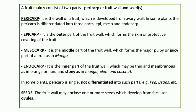In some plants, the pericarp is differentiated into three parts: epicarp, mesocarp and endocarp. Epicarp is the outermost, mesocarp is the middle, and endocarp is the inner part that covers the seed. Epicarp is the outer part of the fruit wall which forms the skin or protective covering of the fruit. In mango, the outer layer we remove is the epicarp.